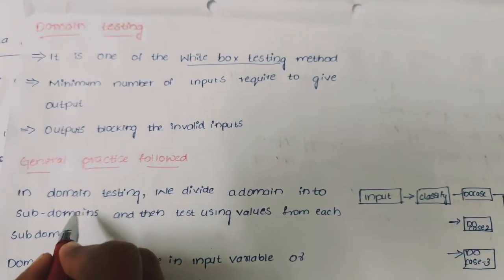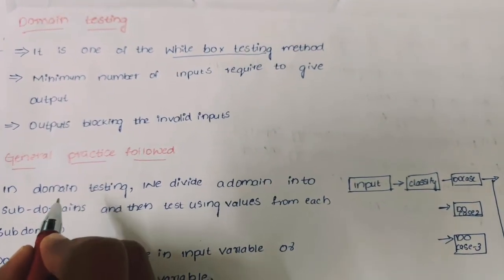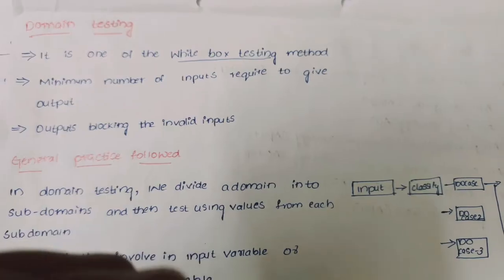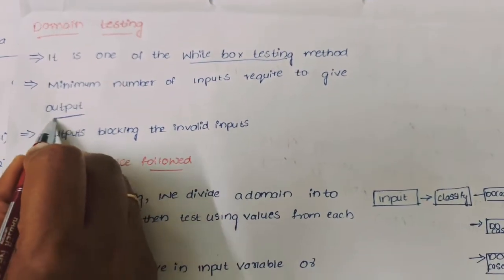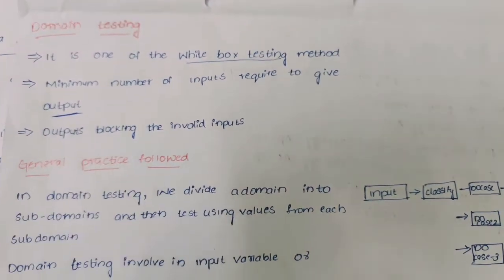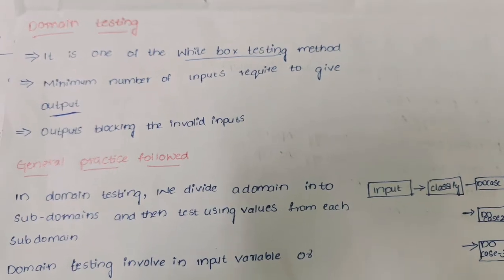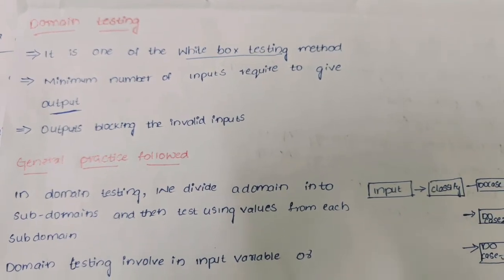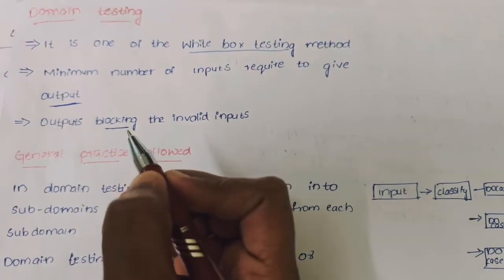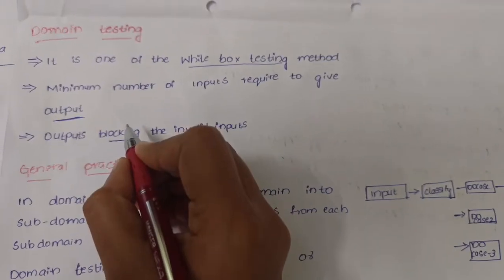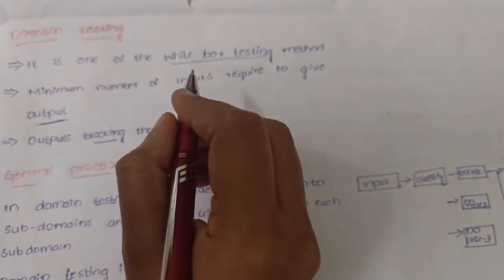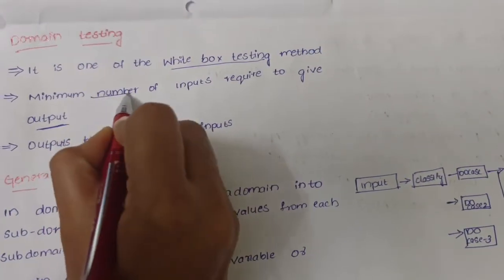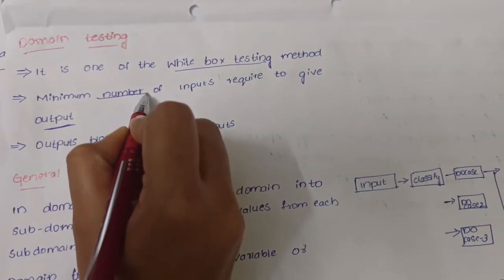In domain testing, we require a minimum number of inputs to get appropriate output. If the input is invalid, the output will be blocking. It is a software testing technique where minimum number of inputs are used to access the appropriate output of a system.